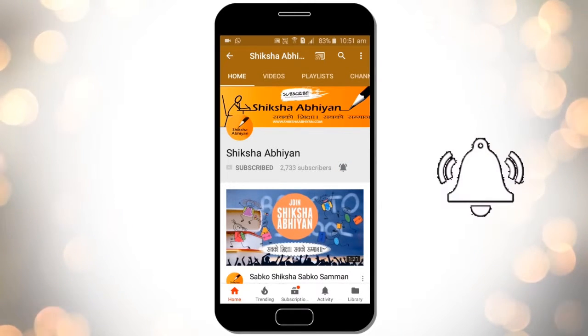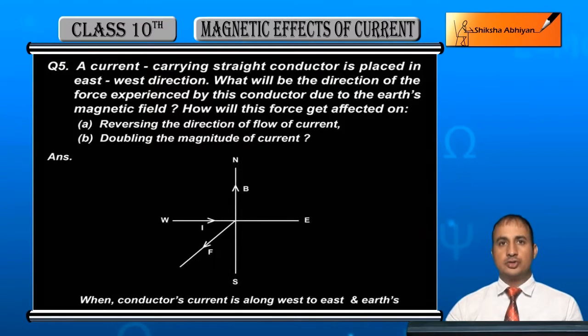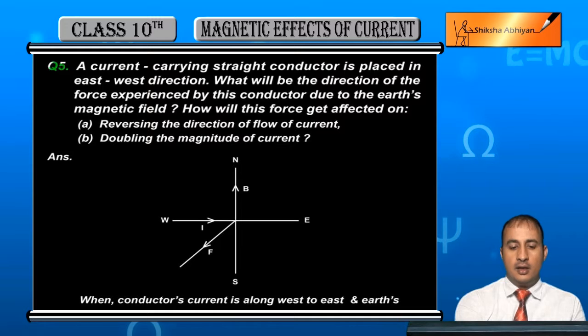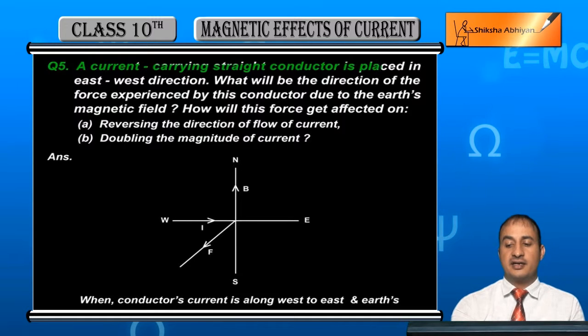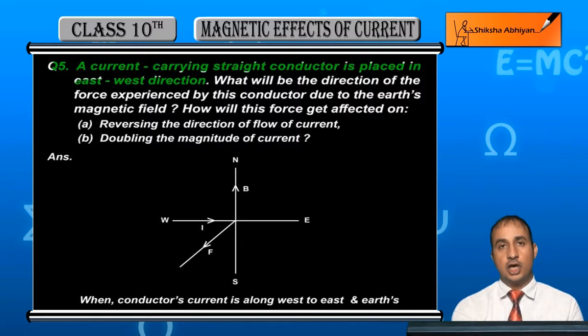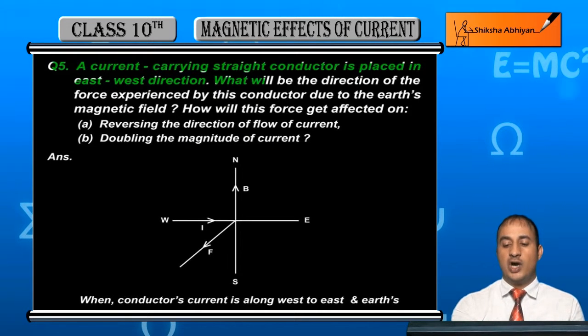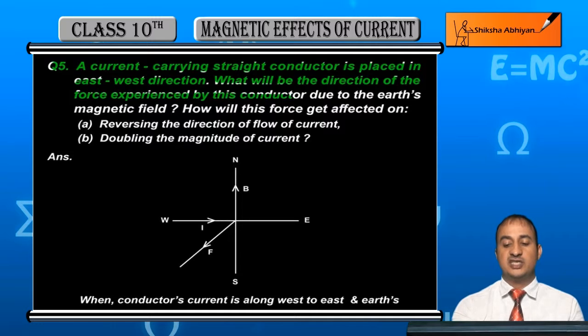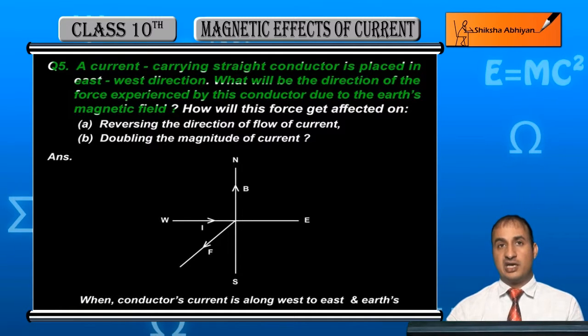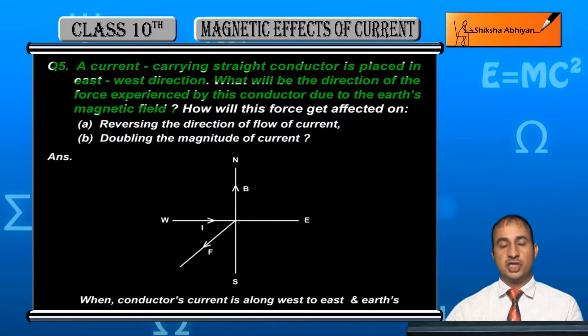Now studying Question 5. Question 5 is: A current-carrying straight conductor is placed in east-west direction. What will be the direction of the force experienced by this conductor due to the Earth's magnetic field?